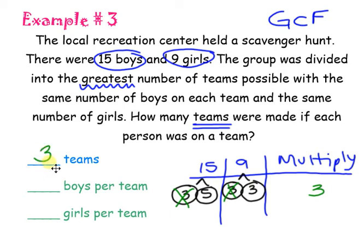But now they want to know how many boys and how many girls on each team. So, take that GCF and divide it back into each number. How many times does 3 go into 15 boys? 5 times. How many times does 3 go into 9 girls? 3 times. So, there's going to be 3 teams and each team is going to have 5 boys and 3 girls.